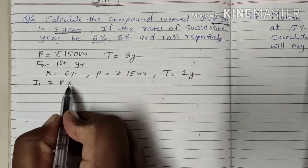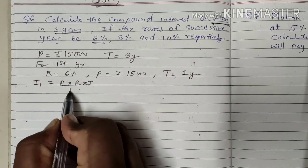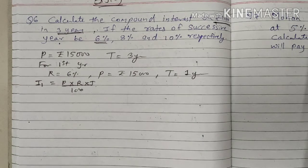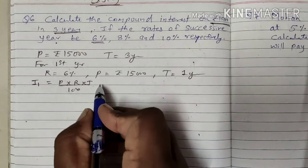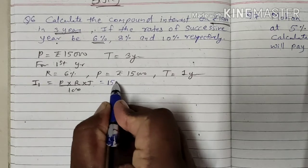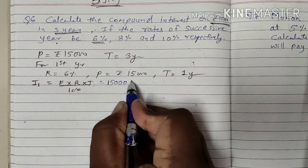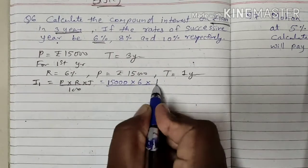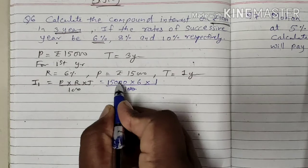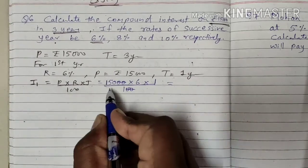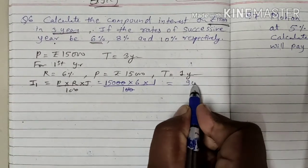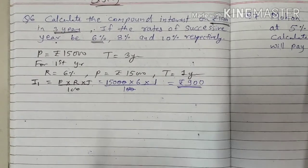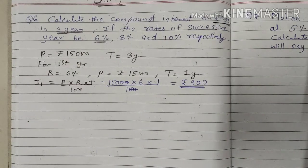The formula is P into R into T upon 100. The value of P is 15,000, rate of interest is 6, time is 1, divided by 100. The zeros will get cancelled. So Rs. 900 is the interest for the first year.